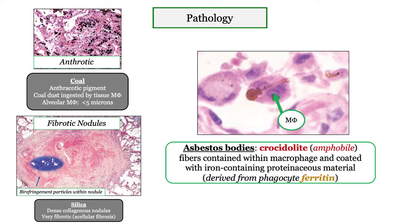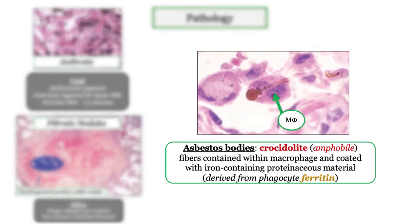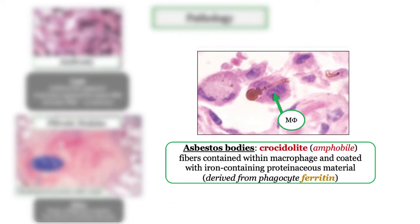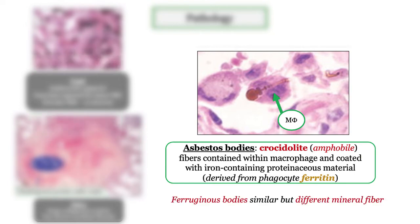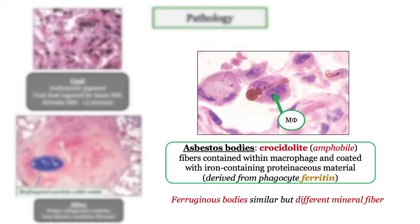The characteristic pathologic finding for asbestos is the so-called asbestos body. They go a little nuts on the fiber description — noted as crocidolite or amphibole fibers, with their darkened appearance representing iron and protein deposition derived from phagocyte ferritin. These are asbestos bodies in distinction to ferruginous bodies, which are also encrusted with ferroproteins but derived from different mineral fibers.